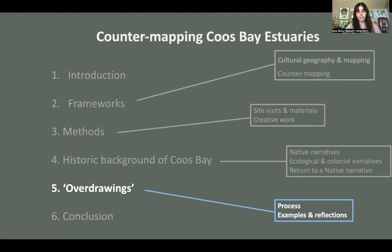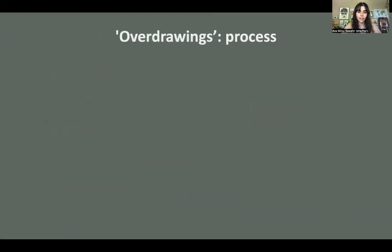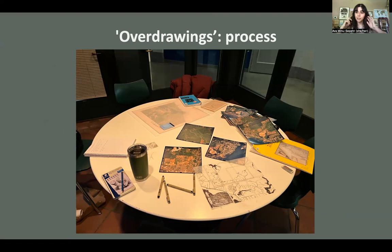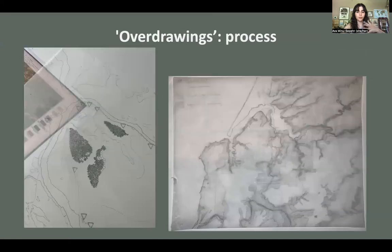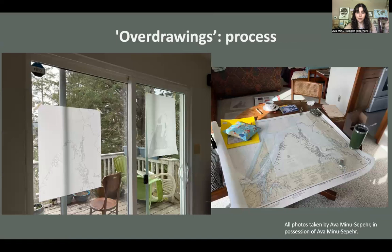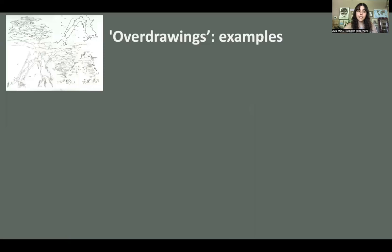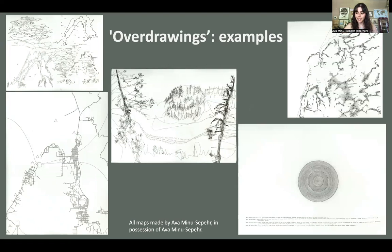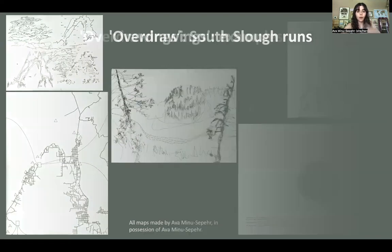For my over drawings, the process looks like sifting through images, photos, and ideas and pulling out themes — making tracings over maps to identify what kinds of landscapes were changed and how the estuaries were impacted. These are the five over drawings I ended up with. For the sake of time I won't go over them all in depth, but I'll give one example.